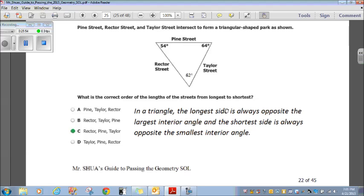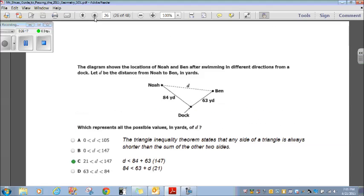With that being said, the largest angle is 64 degrees. So, opposite that is Rector Street. So, Rector is the longest street. Next largest angle is 62 degrees. Opposite that is Pine Street. And then the smallest angle is 54 degrees Taylor. So, Rector, Pine, Taylor, from longest to shortest. Rector, Pine, Taylor, choice C. Boom. There you go. All right. Let's move on.